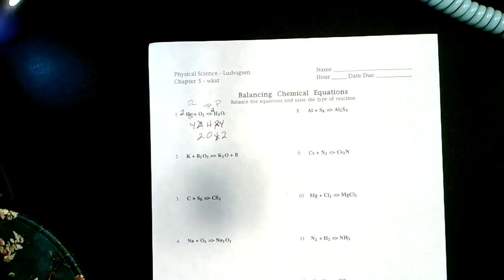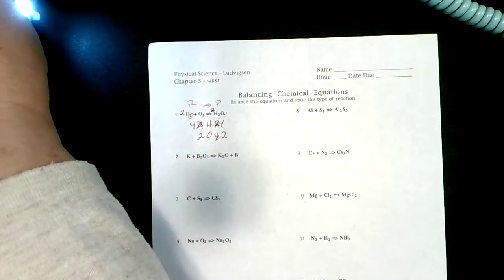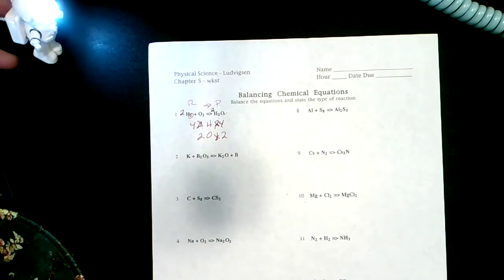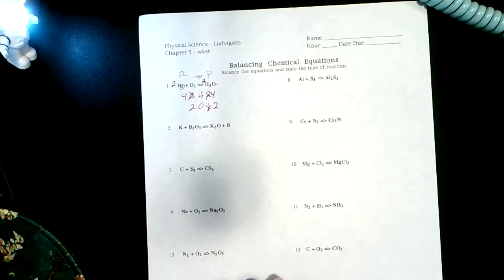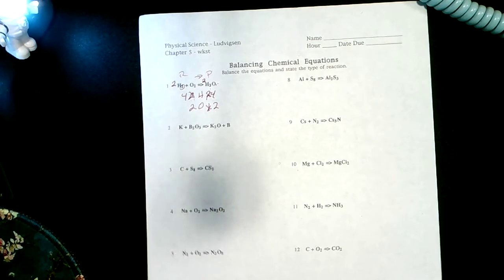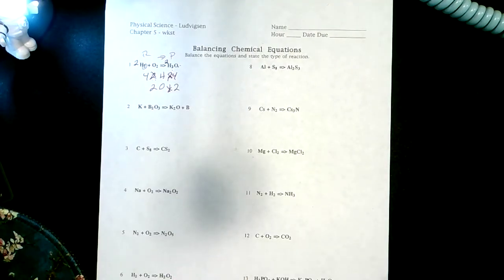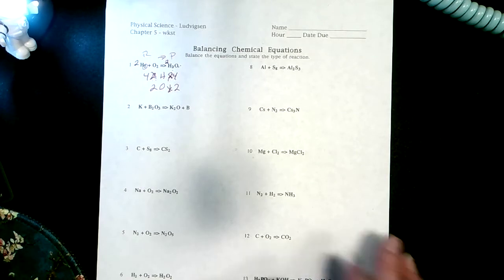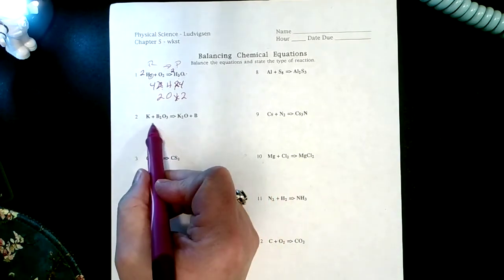Let me see if we can get that shadow off here. I need to get a little more light on here. We'll make that work. So let's look at the next one: K plus B2O3 yields K2O plus B.